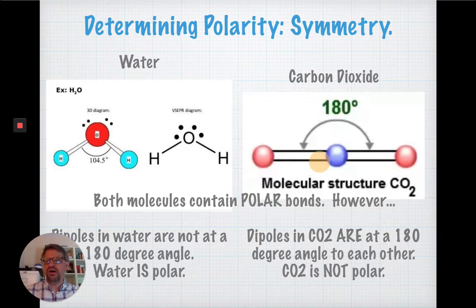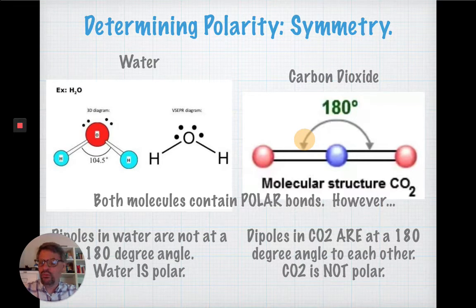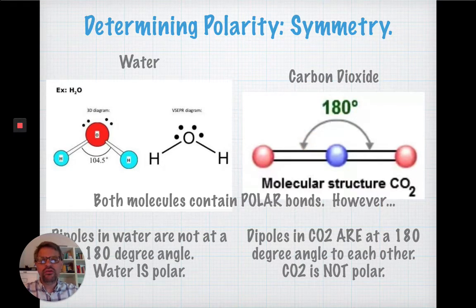If polar bonds are arranged in a way where they cancel out due to the symmetry, the shape of the molecule, the molecule is going to be not polar. So, let's look at some examples.